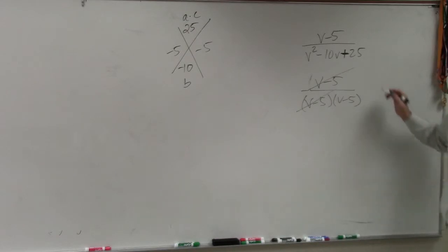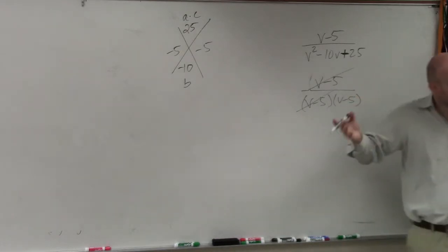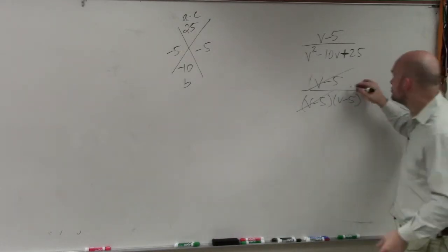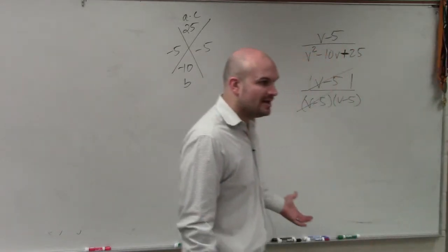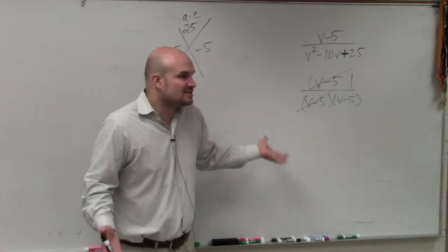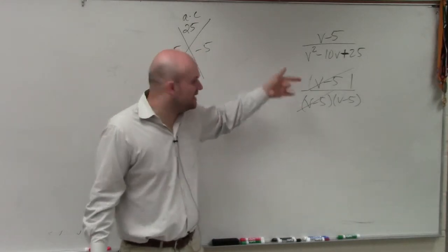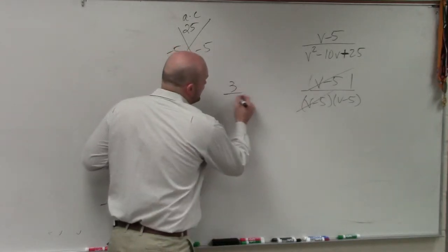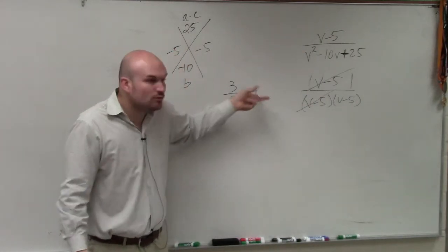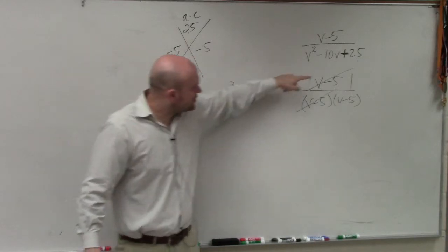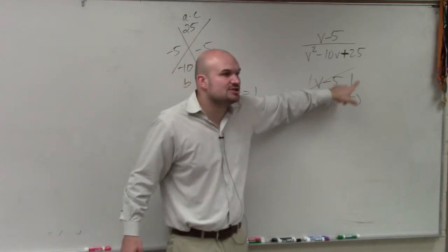V minus 5 divided by v minus 5 is equal to 1. But be careful with that. It's equal to 1. They don't cancel out. They're equal to 1. There's no such thing as canceling out. Remember what we did. 3 divided by 3 equals 1. You don't say 3 divided by 3 cancels out. It's equal to 1. So this divided by this is equal to 1.